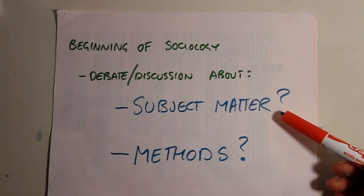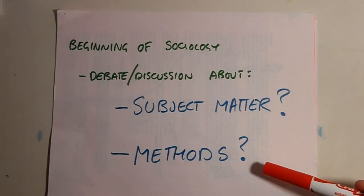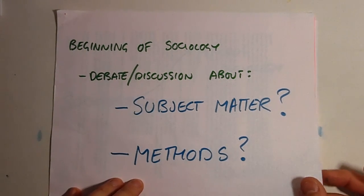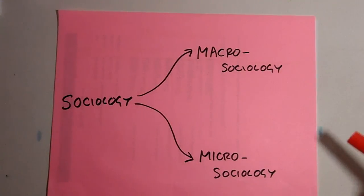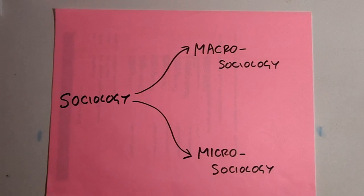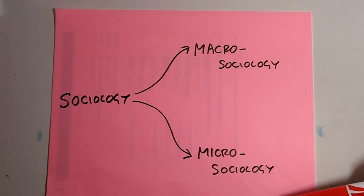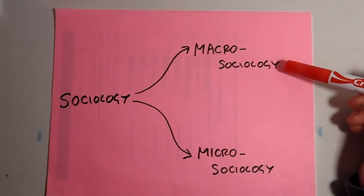Macro-sociology. From the very beginning of sociology, there has been debate and discussion among scholars about what exactly sociology is. This debate has centered on two basic questions: what is the subject matter of sociology, and what is the proper way of studying it? This discussion is still important to modern sociology. Today, sociology can be divided into two basic camps: macro-sociology and micro-sociology. This video focuses primarily on macro-sociology.